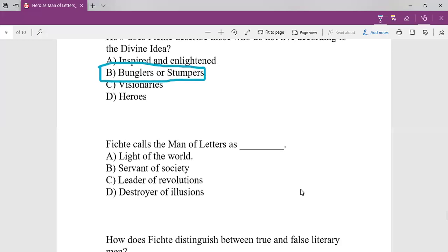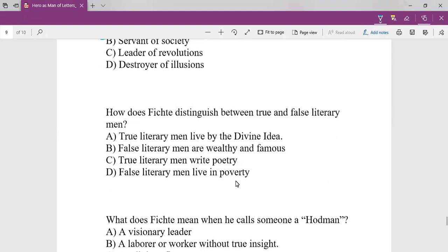Fichte calls the man of letters as the light of the world. It is a biblical connotation. How does Fichte distinguish between true and false literary men? The true literary men and false literary men have a difference. True literary men live by the divine idea. What is the characteristic of a false literary man? They do not live by the divine idea.